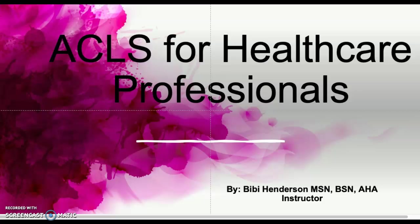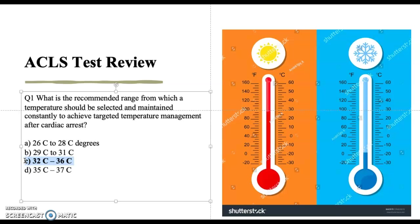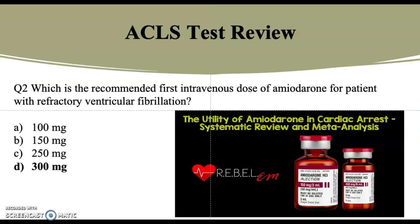The first question: what is the recommended temperature range that should be selected and maintained constantly to achieve targeted temperature management after a cardiac arrest? A) 26 to 28°C, B) 29 to 31°C, C) 32 to 36°C, D) 35 to 37°C. The correct answer is C — 32 to 36 degrees centigrade.